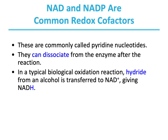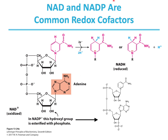NAD and NADP are common redox cofactors, commonly called pyridine nucleotides. They can dissociate from the enzyme after the reaction. In a typical biological oxidation reaction, hydride from alcohol is transferred to NAD+, giving NADH. Structurally, the difference between NAD and NADP is that in NAD, this position is just a hydroxyl, whereas in NADP, this hydroxyl is derivatized by a phosphate. Otherwise the structure is very similar.